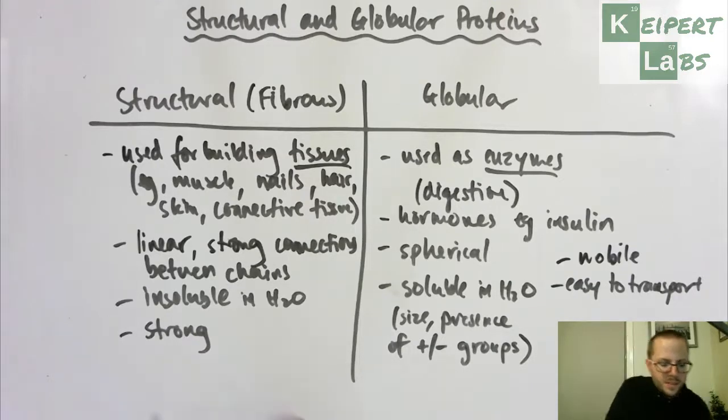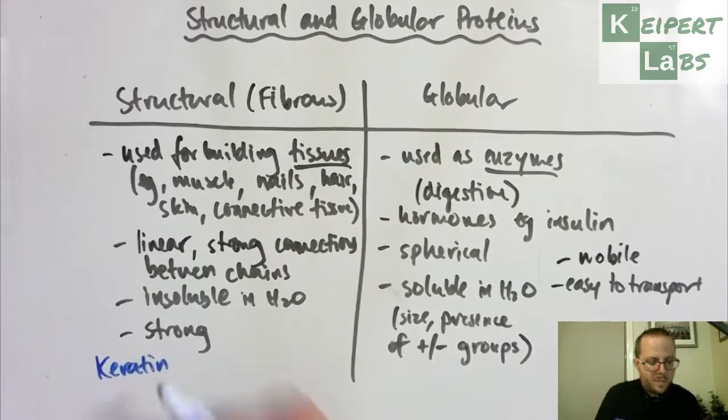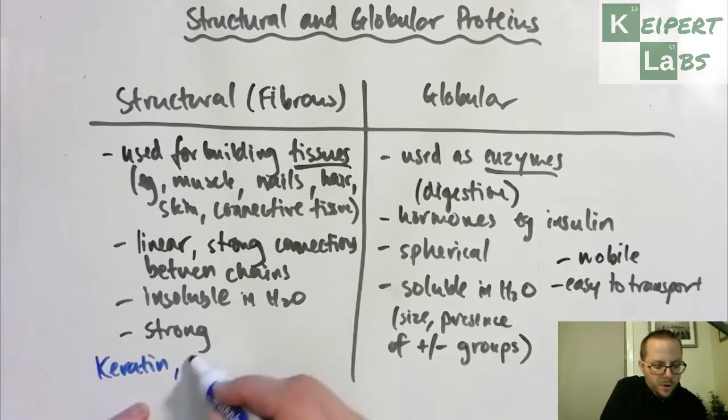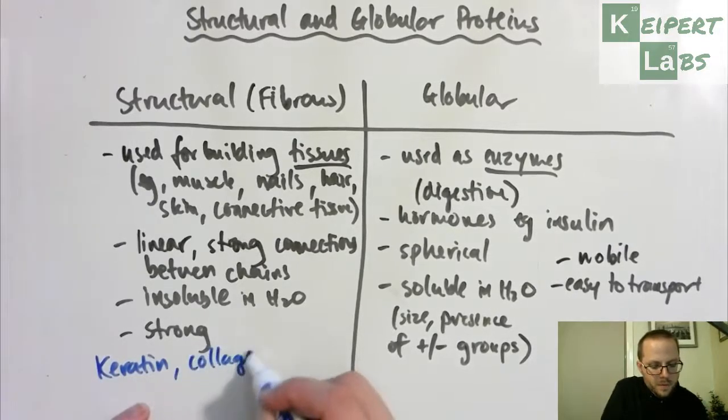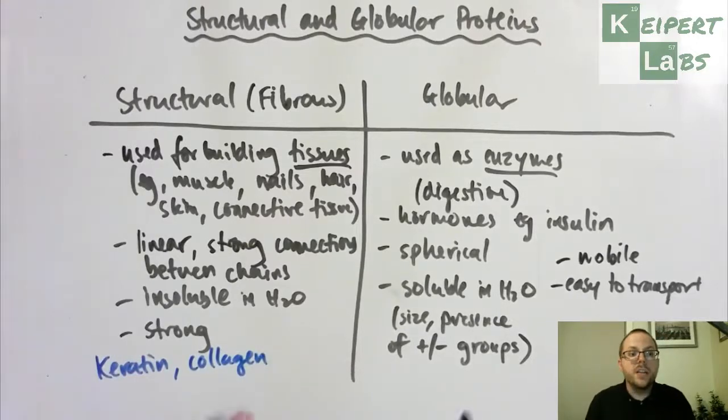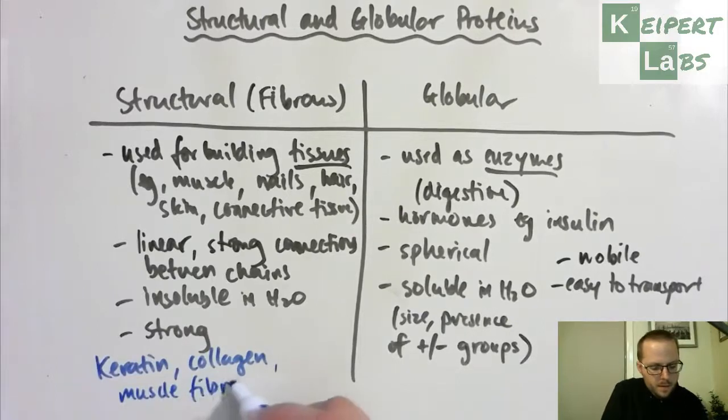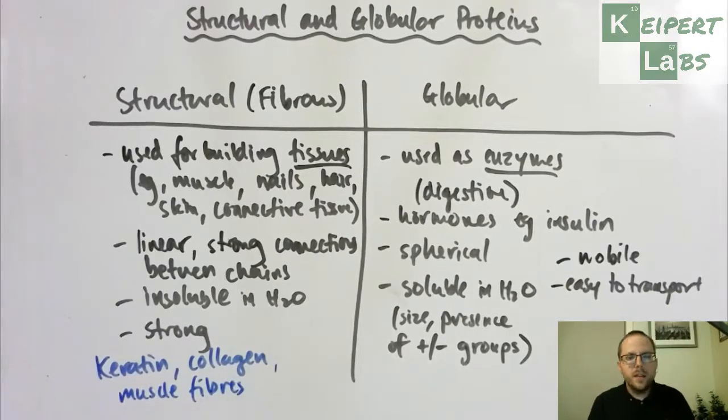So we talked about the one that makes up, so keratin, which is what makes up the hair and fingernails, we've got collagen. Most of the protein in your body, present in your body, is collagen. And then we've got muscle fibers. Needless to say, you want them to be strong. They help to bear your weight, they help you to move your muscles, and those muscle fibers are structural proteins.